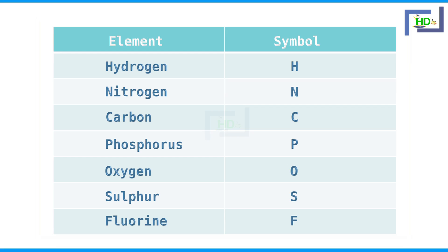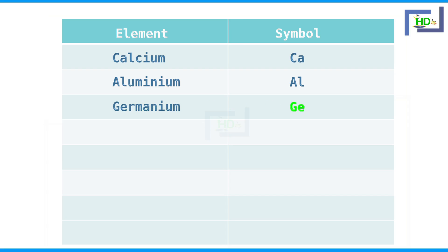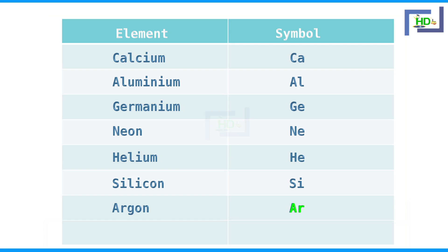For some elements, the first two letters of the name of the element are taken. For calcium, if we take C, it is already the symbol for carbon. Therefore, the symbol for calcium is given as Ca. When two letters are chosen, the first one is capital and the second one is small. Similarly, aluminium is Al, germanium Ge, neon Ne, helium He, silicon Si, argon Ar, nickel Ni.